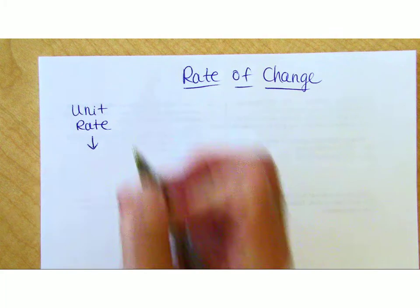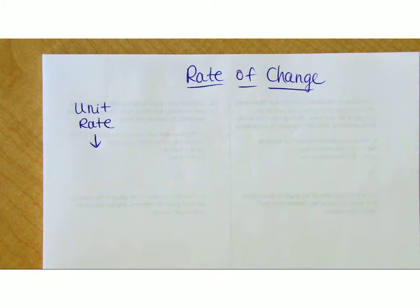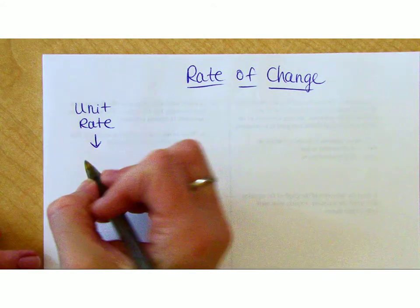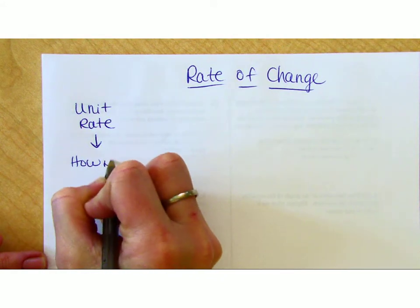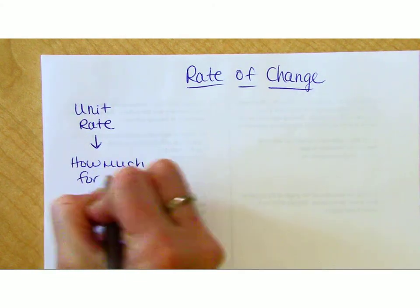Unit rate was really simple. It was like, here's a box of pencils. There's 12 of them and this whole box is $2.49. How much for one? So unit rate means how much for one. You calculated the cost per pencil, the mile per hour, whatever it is you needed to do. This is how much for one.